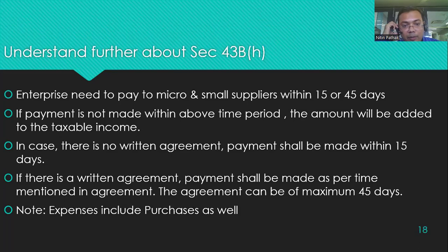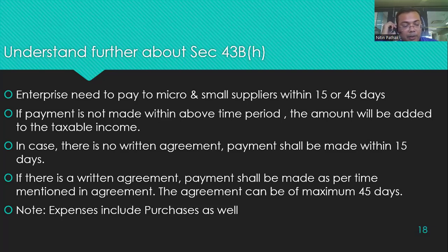To understand Section 43B(h) further: enterprises need to pay micro and small enterprise suppliers within 15 days or 45 days as applicable. If payment is not made within the above time limit, the amount will be added to taxable income. If there is no written agreement, payment should be made within 15 days. If there is a written agreement, payment should be made as per agreement but with a maximum time limit of 45 days. This applies to expenses as well as purchases.